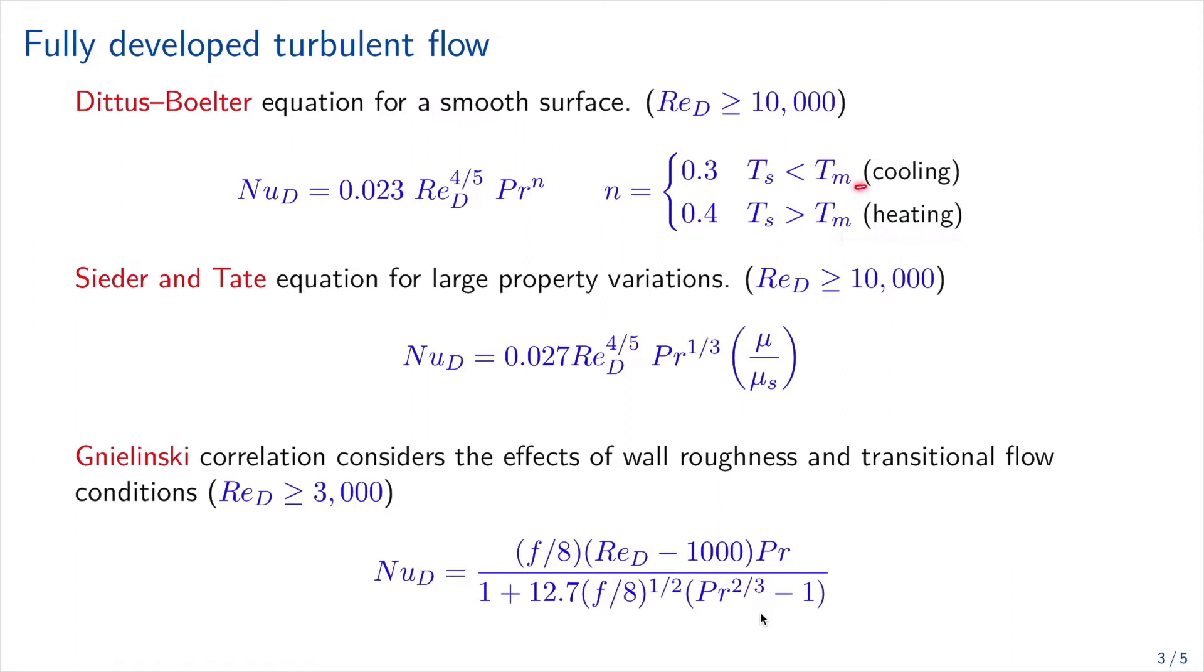In the case of cooling, the temperature of the surface is lower than the mean temperature of the fluid and we select 0.3. Otherwise we are in a heating situation and we select 0.4. The Sieder and Tate equation is also valid for Reynolds bigger than 10,000. This is very good for large property variations. So the Nusselt number is given in terms of Prandtl and Reynolds and the viscosity, so we have μ and μs.